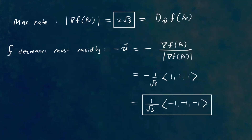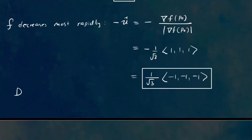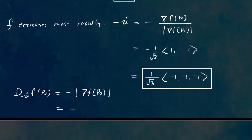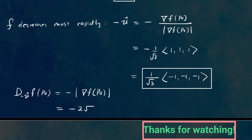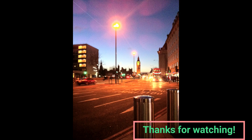What is the derivative in that decreasing direction? The directional derivative in the direction of the negative unit vector is simply the negative of the magnitude of the gradient vector at P0. We know the magnitude is 2√3, so we make that negative: the answer is −2√3.